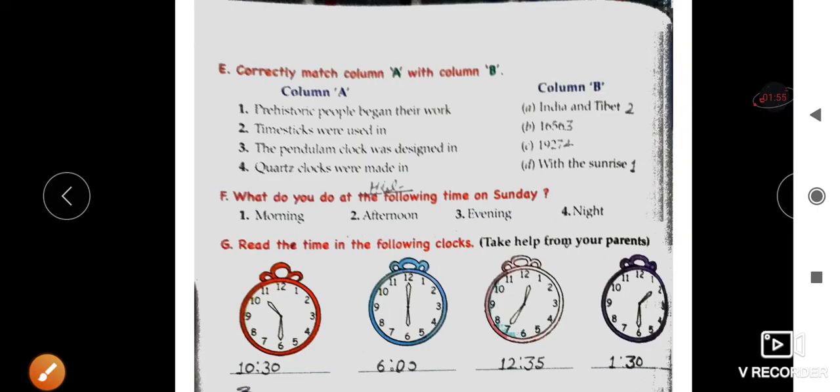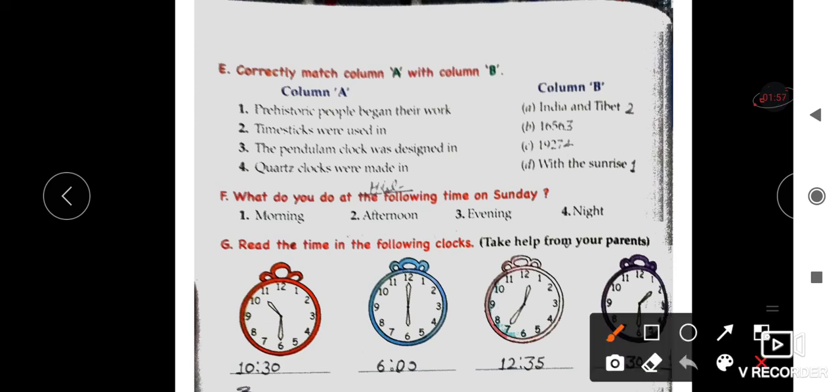Okay students, now Part E: Correctly match Column A with Column B. Number 1: Prehistoric people began their work - correct option is with the sunrise, which is Option D. Number 2: Time sticks were used in India and Tibet - Option A is correct.